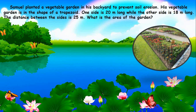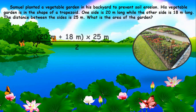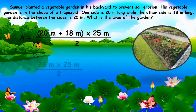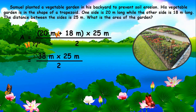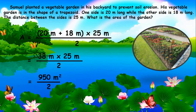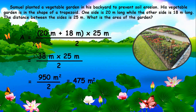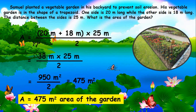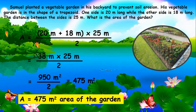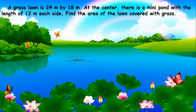The number sentence is: 20 meters plus 18 meters, times 25 meters, divided by 2, equals n. Solving: 20 meters plus 18 meters equals 38 meters; 38 meters times 25 meters equals 950 square meters; 950 square meters divided by 2 equals 475 square meters. Therefore, the area of Samuel's garden is 475 square meters.